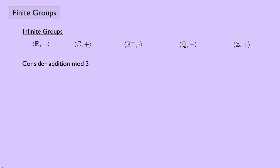Let's now look at addition mod 3. To consider addition mod 3, we need to know what the set is and what the operation is. The set we're talking about is Z3, which consists of the integers 0, 1, and 2. We're talking about addition mod 3, so for instance, 1 plus 2, instead of being 3, would be 0.